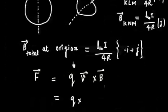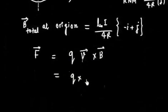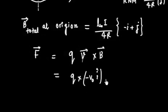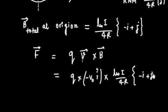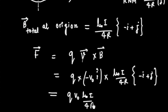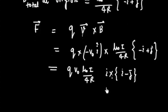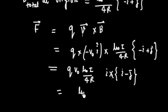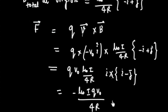So F = Q(-V₀î) × (μ₀I/4R)(-î + ĵ). Taking the constant term QV₀μ₀I/4R outside, we get: î × (-î + ĵ) with a minus sign — so î × î = 0, and î × ĵ = k̂. Therefore the force becomes -(μ₀IQV₀/4R)k̂. This is the total force on the particle.